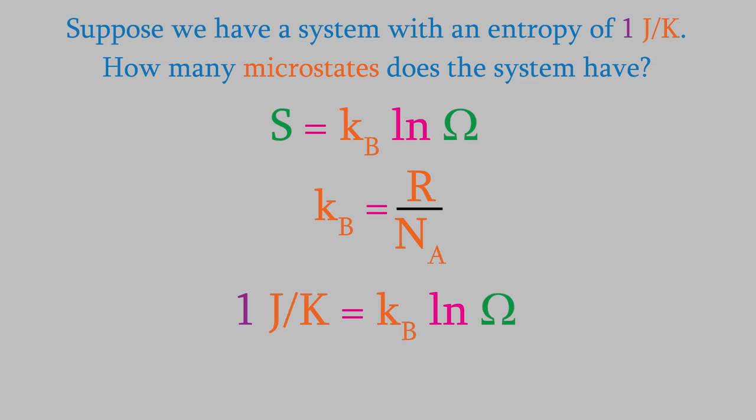When we solve the equation for omega, we find out that it's equal to e raised to the power of 7.243 times 10 to the 22nd. That's a huge number. It's so large that no computer in the world could ever calculate it.